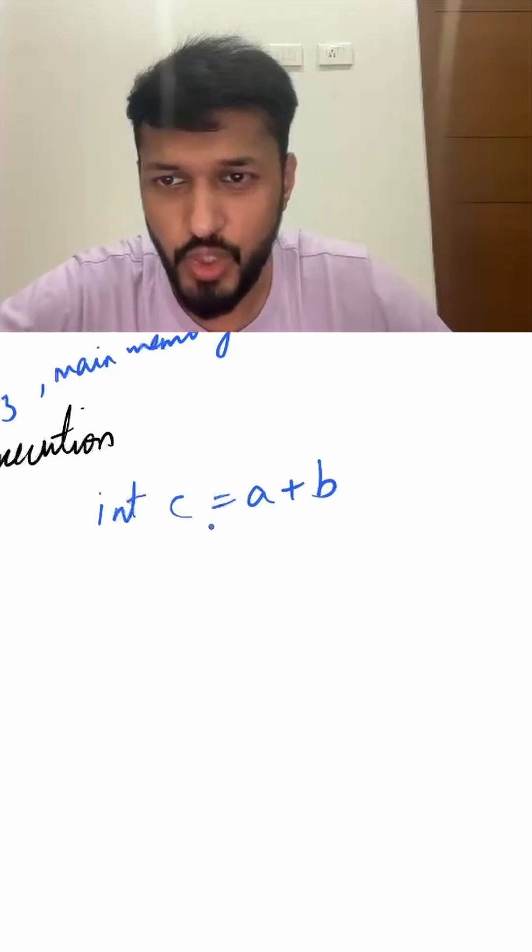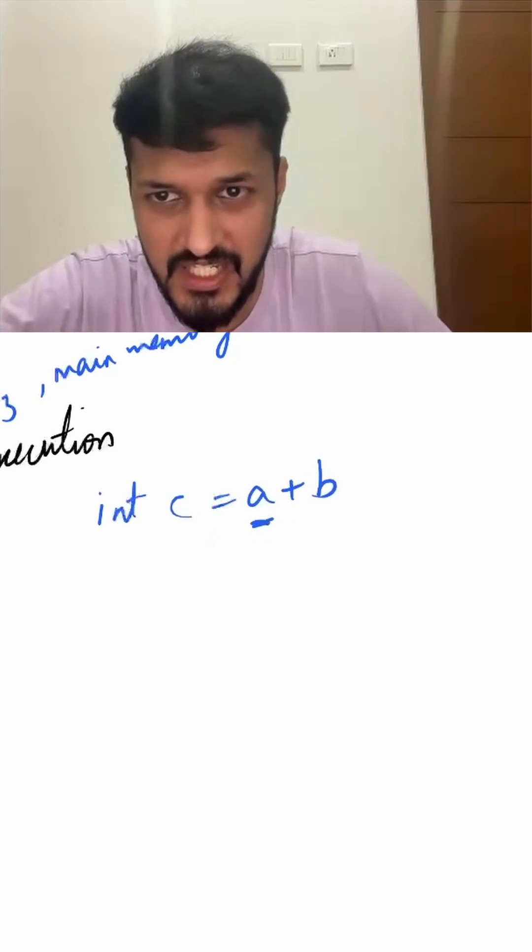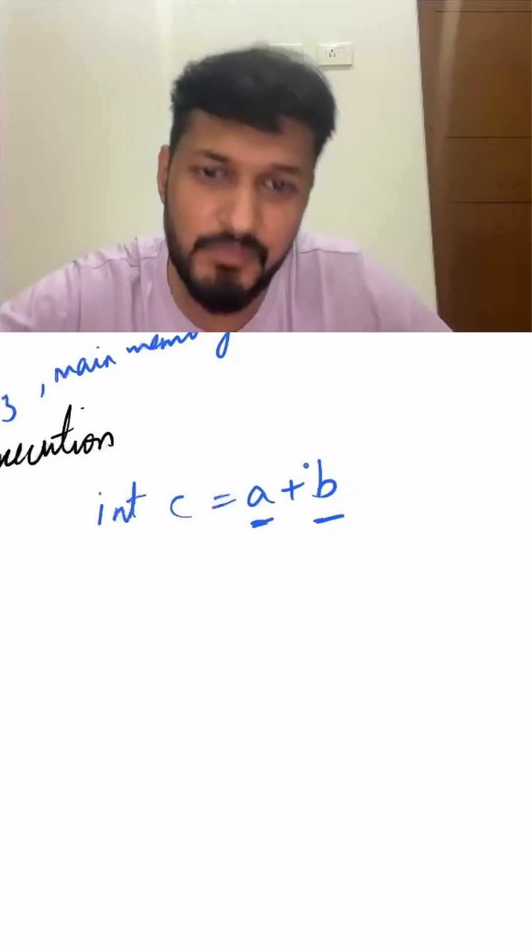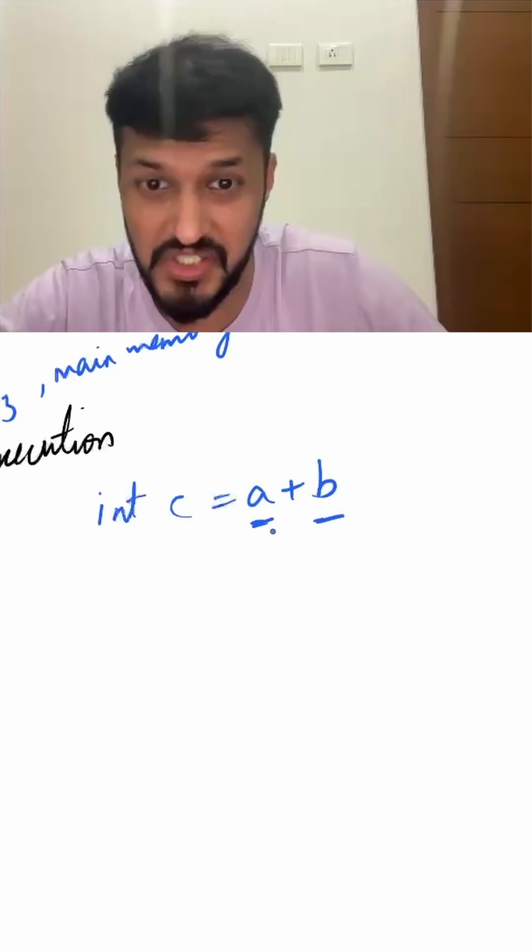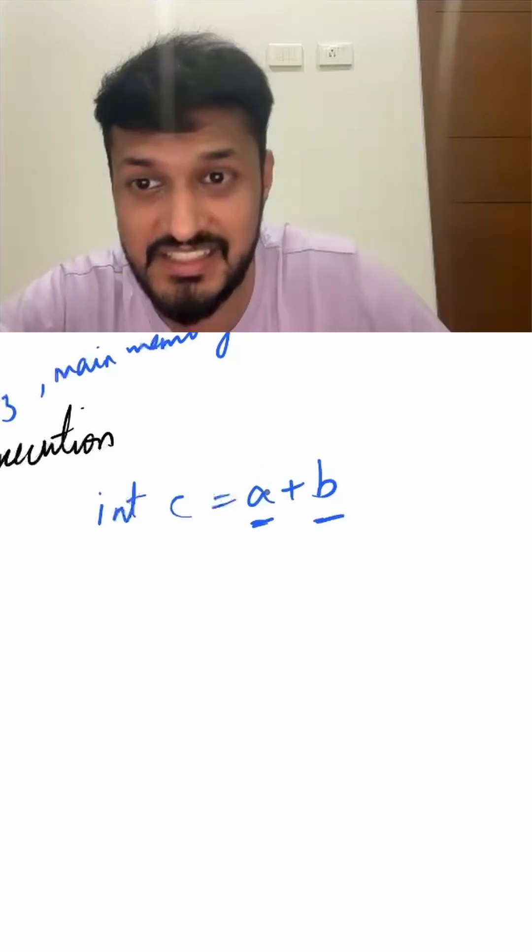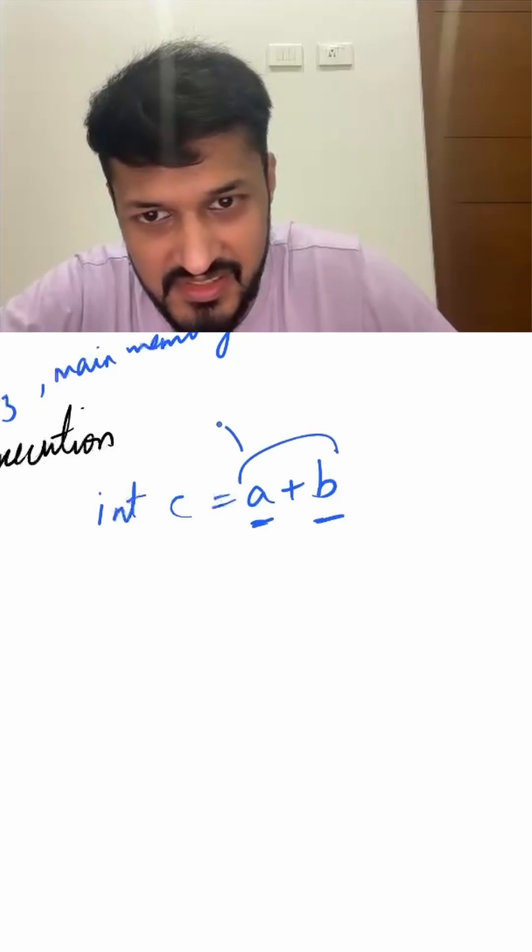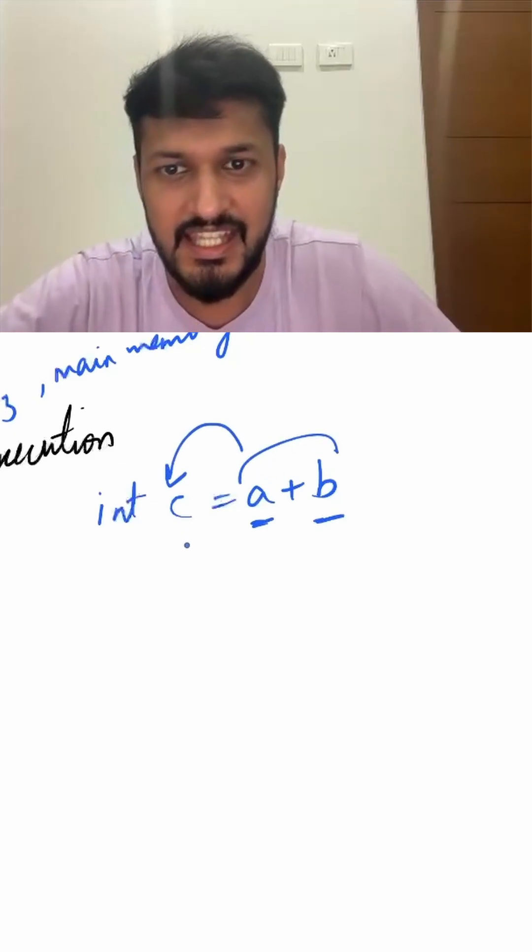What happens is the values of a and b are loaded from memory into the registers. The plus operation happens on the registers itself. After that operation, result c is calculated, and then this c will remain in registers until it is flushed to main memory.